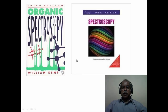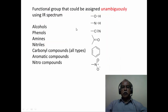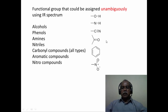For illustration purposes, the spectra have been taken from these two books. The functional groups that could be easily or unambiguously assigned from an infrared spectrum are typically alcohols and phenols, amines, nitriles, carbonyl compounds, aromatic compounds, and nitro compounds. Although the infrared spectra give a wealth of information about many other functional groups, from the organic chemist's point of view, these are the functional groups one normally looks for. The presence or absence of these functional groups can be unambiguously assigned.